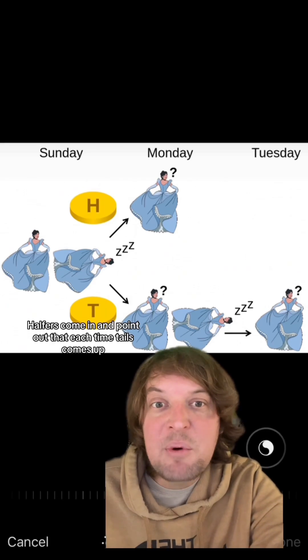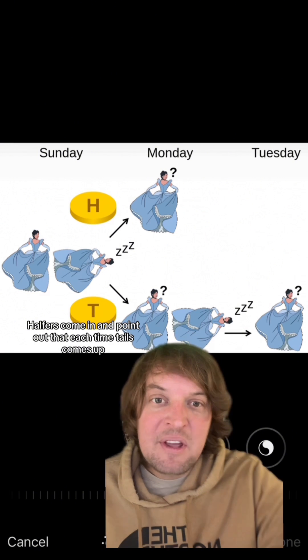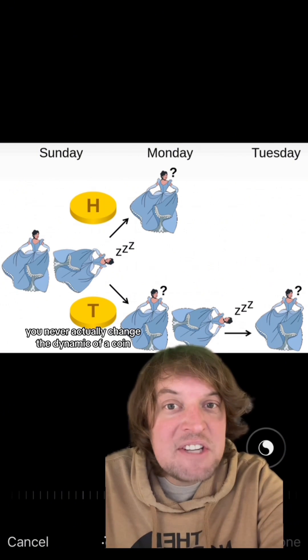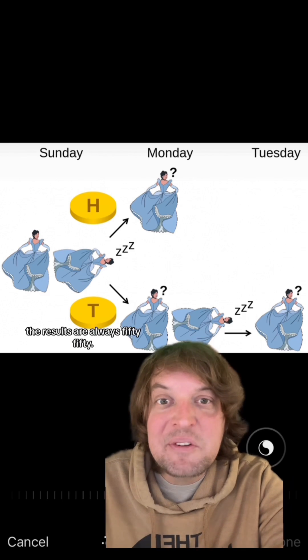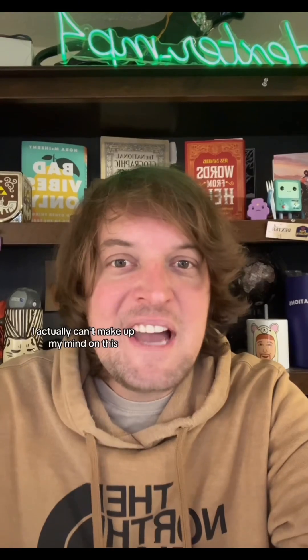Halfers come in and point out that each time tails comes up, they come in sets of two. You never actually change the dynamic of a coin. The results are always 50-50. I actually can't make up my mind on this. What do you think?